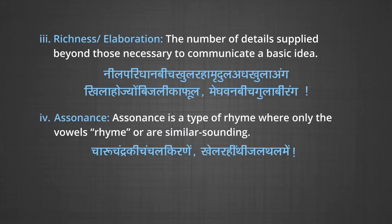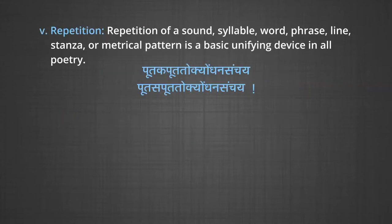Then we go on to assonance — assonance is a type of rhyme where only the vowels rhyme or are similar sounding. Then another element is repetition — repetition of a sound, syllable, word, phrase, line, stanza or metrical pattern is a basic unifying device in all poetry. For example: 'poot kapoot to kya dhan sanchay, poot sapoot to kya dhan sanchay.' It is highly rhythmic.